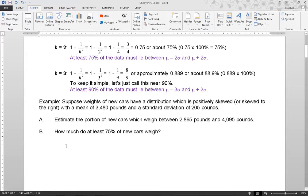For example, suppose weights of new cars have a distribution which is positively skewed or right skewed with a mean of 3,480 pounds and a standard deviation of 205 pounds. A. Estimate the portion of new cars which weigh between 2,865 pounds and 4,095 pounds. B. How much do at least 75% of new cars weigh?